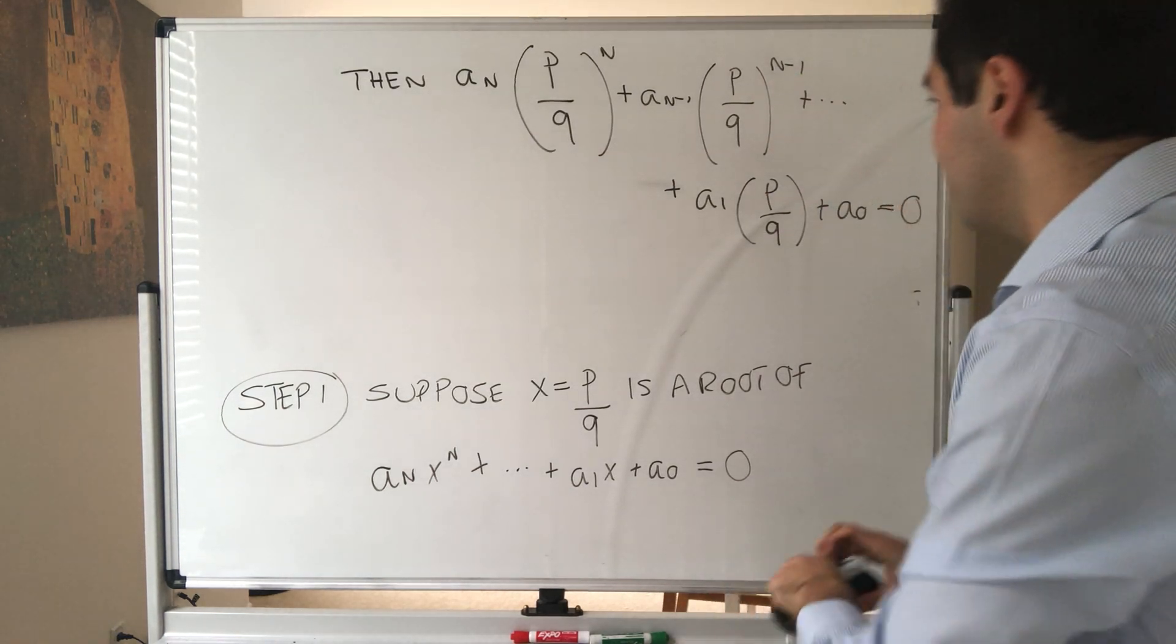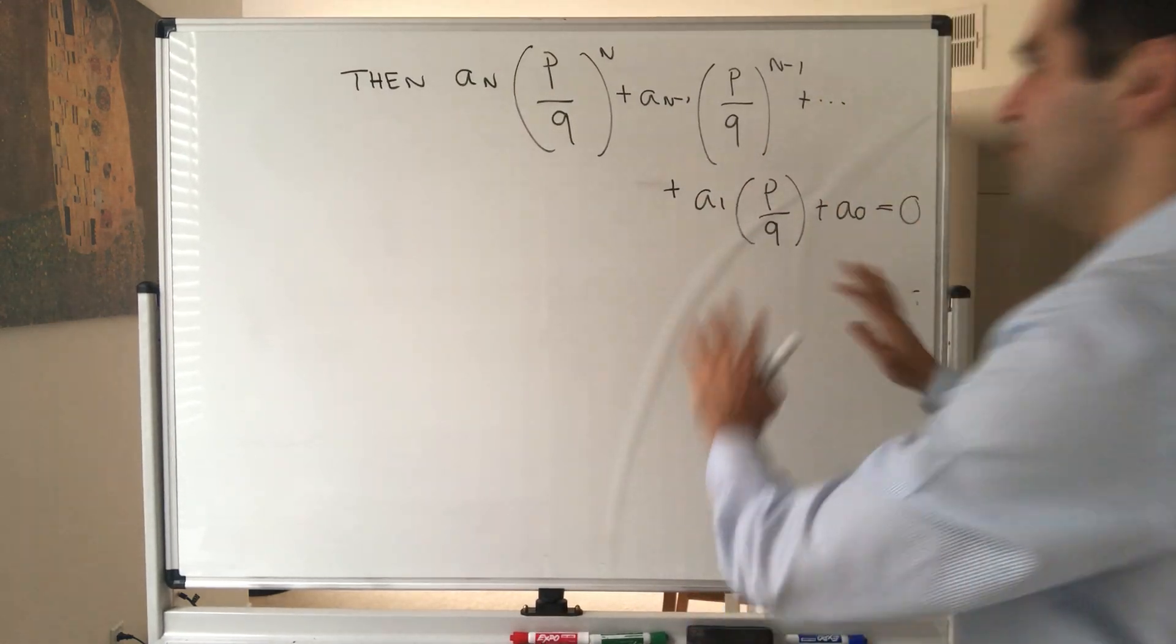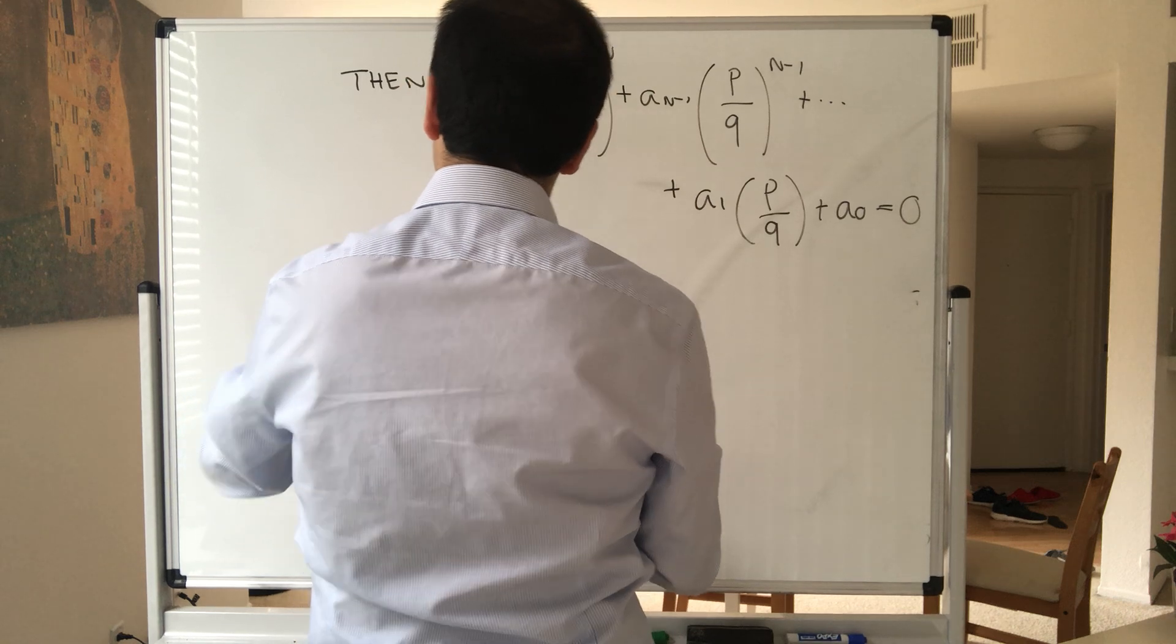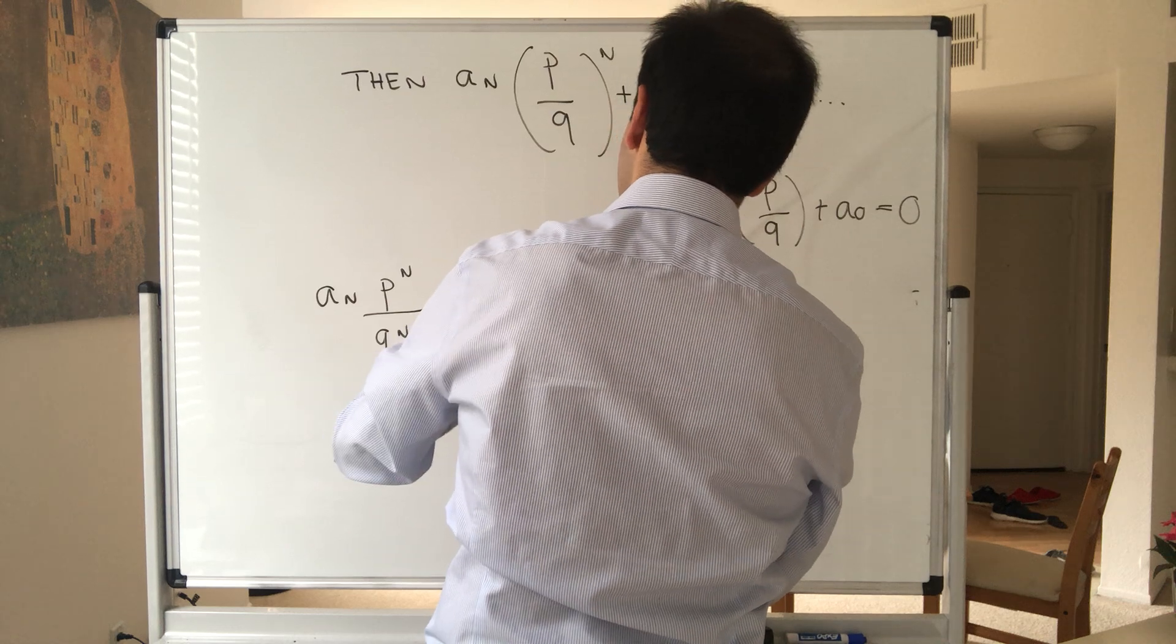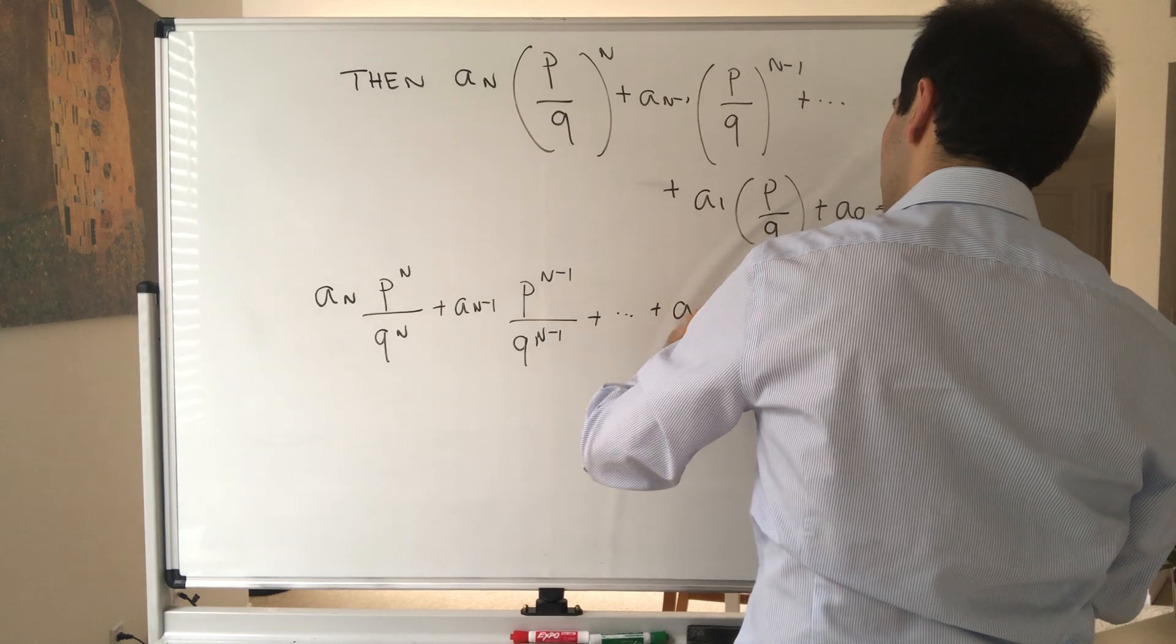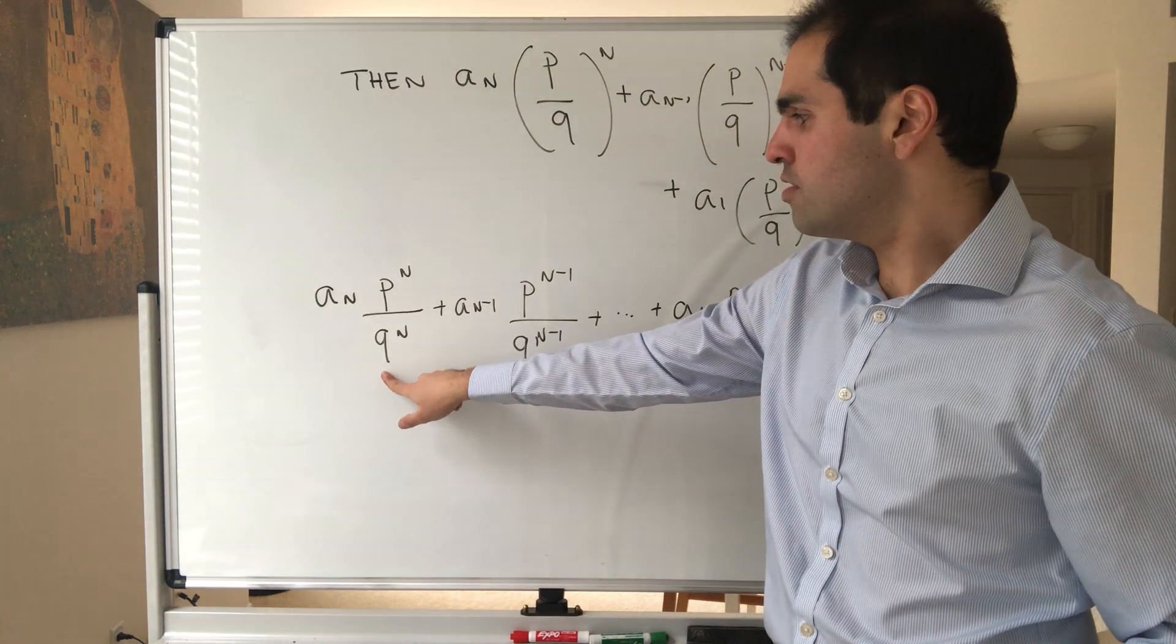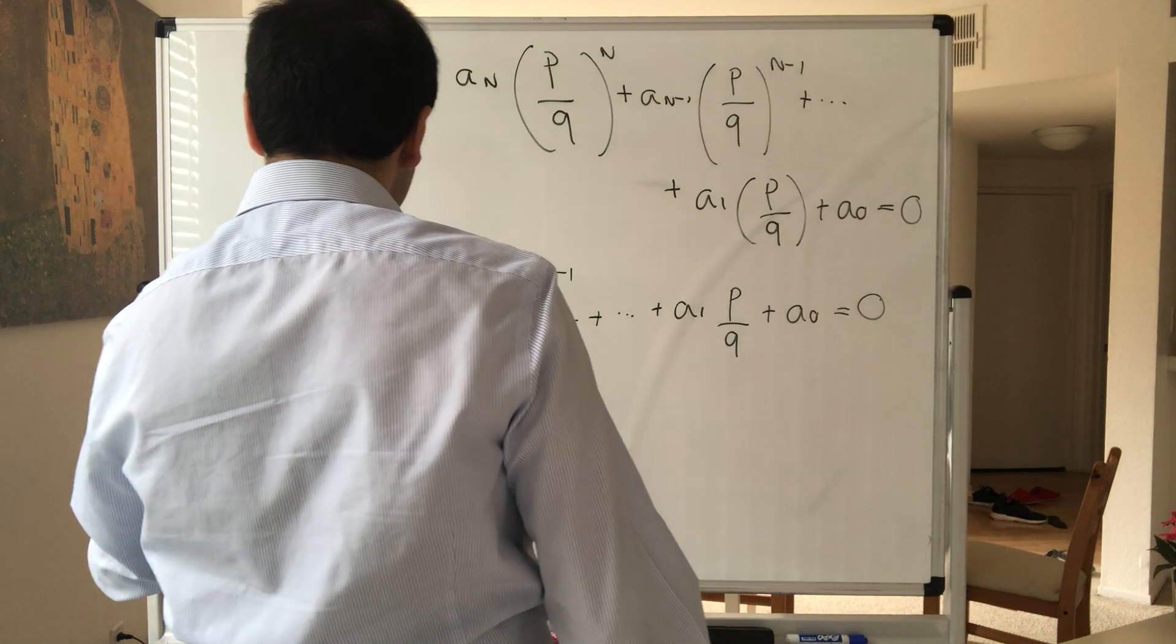So a_n (P/Q)^n plus a_(n-1) (P/Q)^(n-1) plus dot dot dot plus a_1 (P/Q) plus a_0 equals 0.